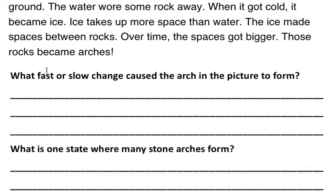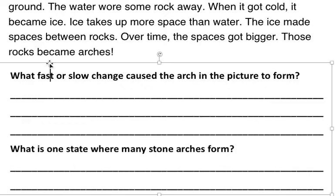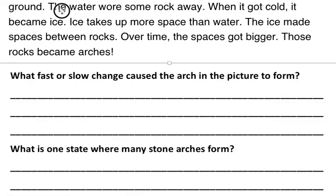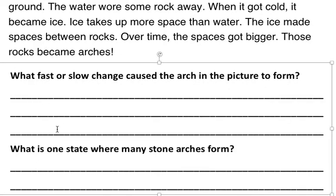So answer these two questions by underlining the text evidence up here, and writing a full sentence answering it down here. What fast or slow change caused the arch in the picture to form? And what is one state in the United States where many stone arches form?